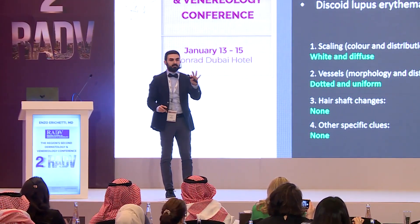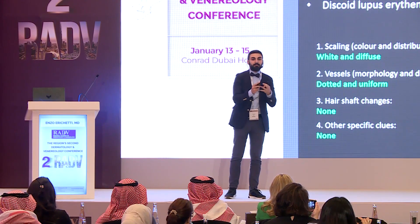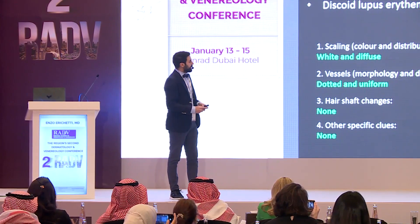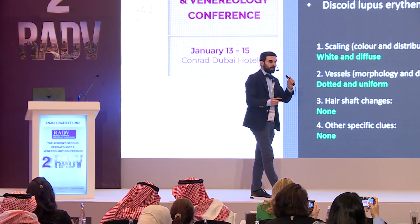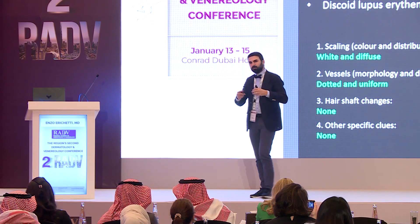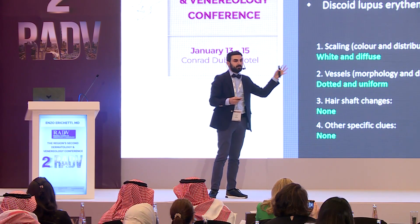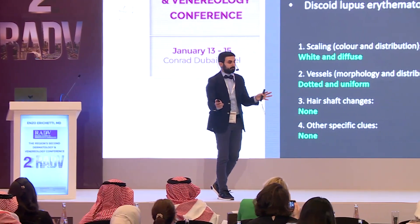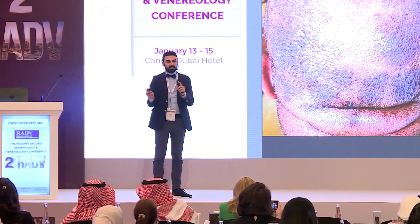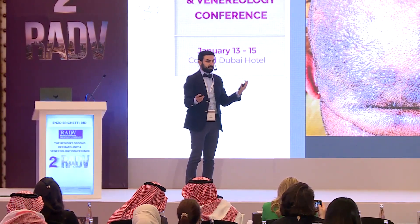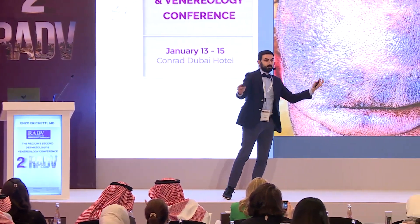Psoriasis: we mainly have scaling — white, diffuse scaling. We may also see vessels; it's not easy because the epidermis on the scalp is very thick, but if we use some oil we can appreciate them. They are dotted vessels distributed in a uniform pattern. In dark skin patients, vessels are not easy to appreciate, so we have to rely on the scaling pattern: white, diffuse scaling.